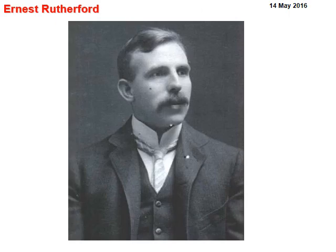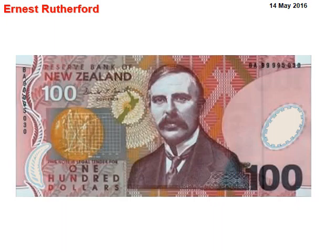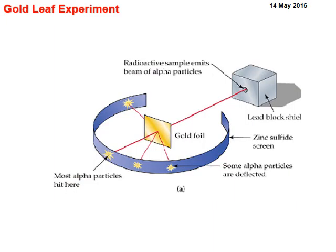Then his research student Ernest Rutherford came along in 1909. We know Ernest Rutherford is from New Zealand — he's on our $100 bill. The boy from Mutiwaka in New Zealand discovered the nucleus through something called the Gold Leaf Scattering Experiment, also known as the gold foil experiment.